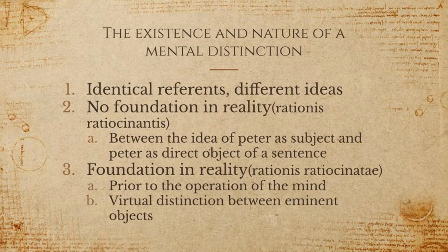Then we have the mental distinction. The mental distinction has identical reference, so they talk about the same thing, but they have different ideas. There are two kinds of mental distinction. One has no foundation in reality. This is called the distinction of reasoning reason, or rationes ratiocinantis — between the idea of Peter as subject and Peter as direct object of a sentence. These are simply different ideas we have about an object that don't have any corresponding distinction in the object itself.